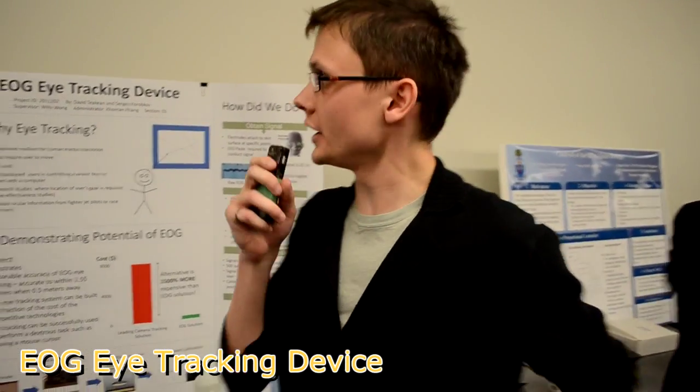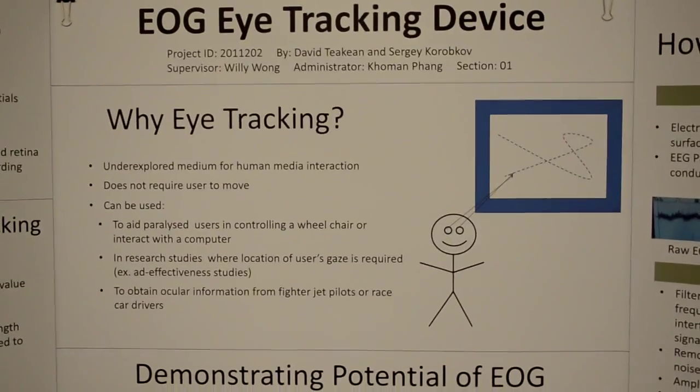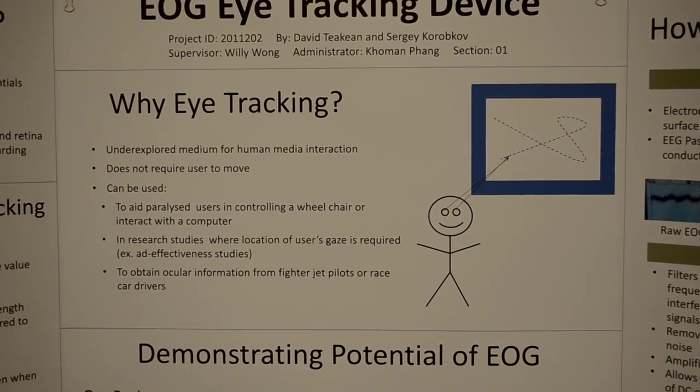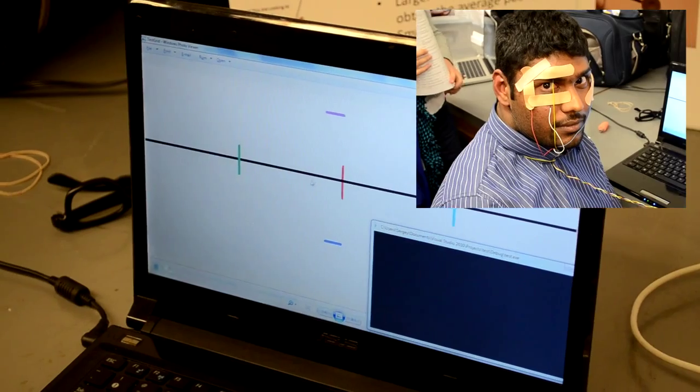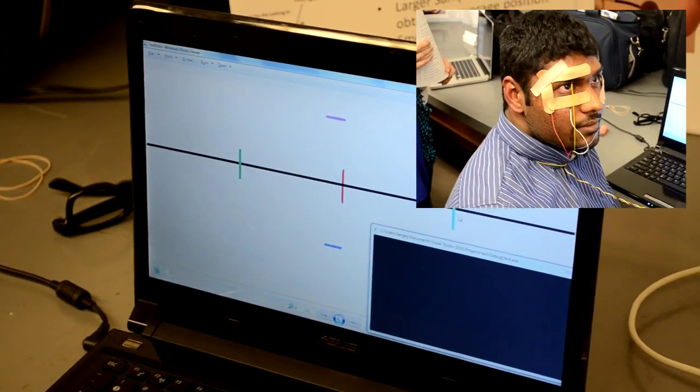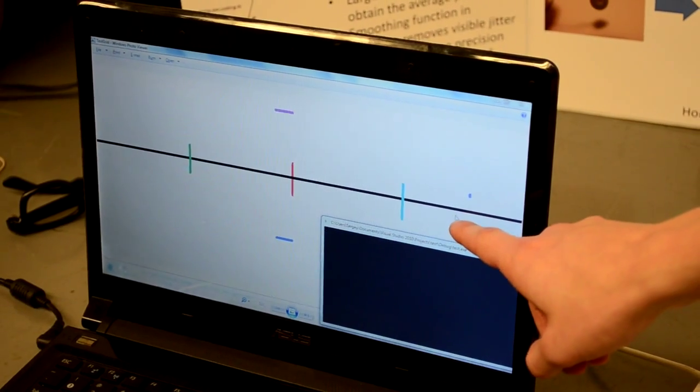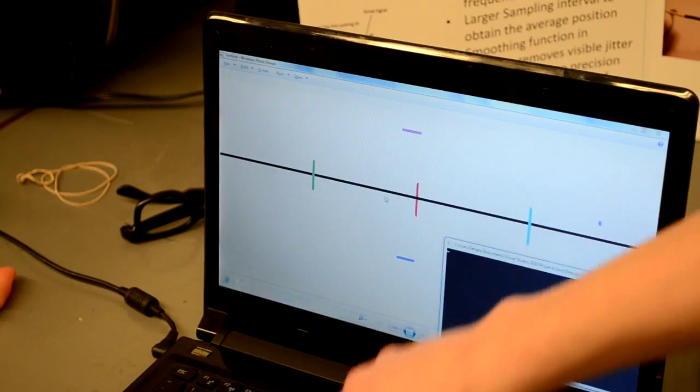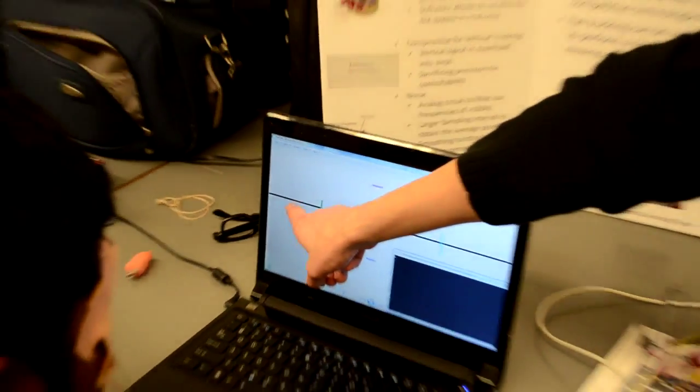For our design project, we built an eye tracking device that is able to track the location of the person's gaze based on the biopotentials which we measure around the eyes. In our demonstration right now, David is actually moving the mouse cursor horizontally. If you can just demonstrate to move the cursor where my finger is. David is doing that with his eyes, he's not touching the trackpad. This is all by measuring the potentials around the eyes.